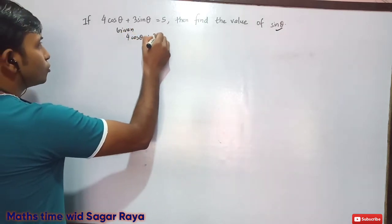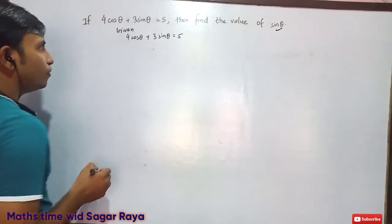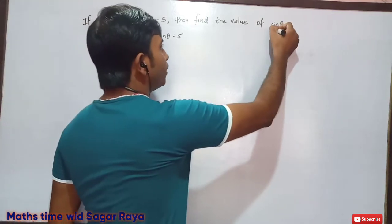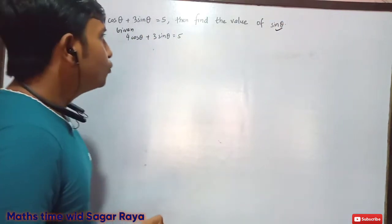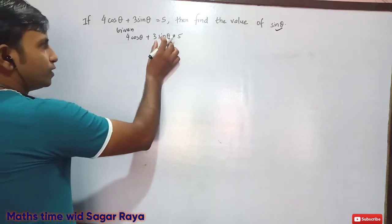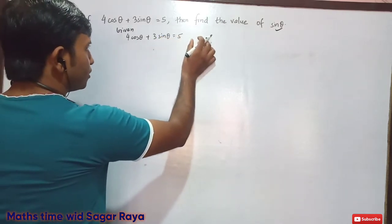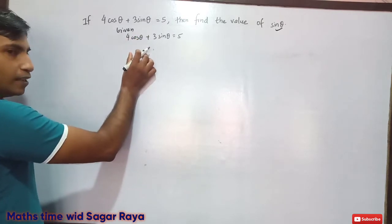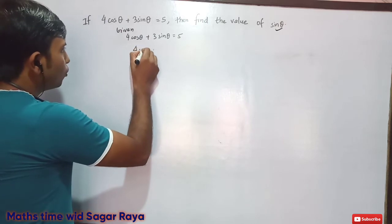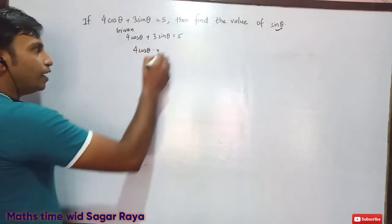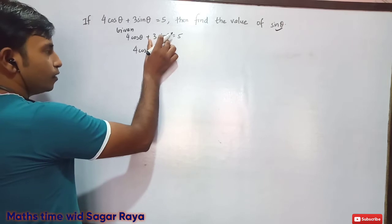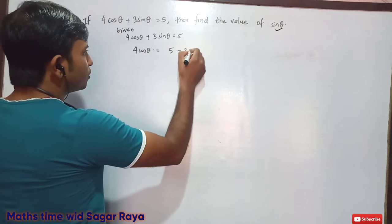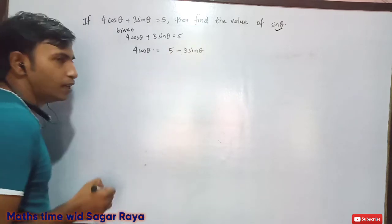Since we have to find the value of sin θ, I am taking the sin θ term to another side and keeping the cos θ on the right hand side. So 4 cos θ is on the left hand side, and 5 minus 3 sin θ is on the right hand side — because when +3 sin θ moves to the right it becomes −3 sin θ.